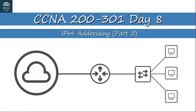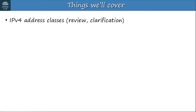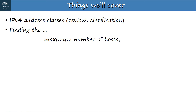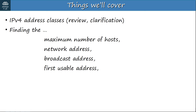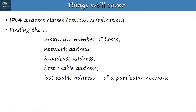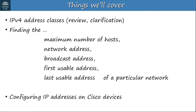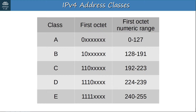This is the 8th lecture in the series, and part two on IPv4 addresses. This should be a shorter video than the last one, just covering a few things we missed. I'll do a quick review of IPv4 classes and clarify some things I didn't explain well previously. I'll explain how to find the maximum number of hosts, the network address, the broadcast address, the first usable address, and the last usable address of a particular network. Finally, I will outline how to configure IP addresses on Cisco devices, which we'll then practice in Packet Tracer in the next video.